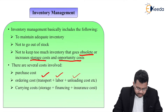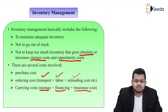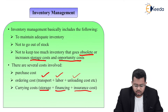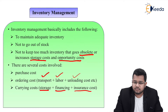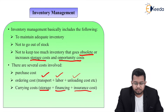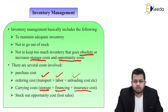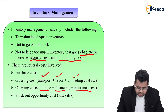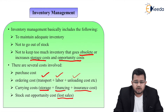Then there are carrying costs, which include storage, financing, and insurance costs. If you want to store your inventory, there will be warehouse or storage costs. Financing cost applies if you borrowed money to buy inventory — you'll need to pay interest on that. Insurance cost covers insuring your inventory, for example fire insurance, which costs you in terms of premium. Finally, there is stockout opportunity cost, which represents lost sales — if you run out of stock, you might lose out on sales.